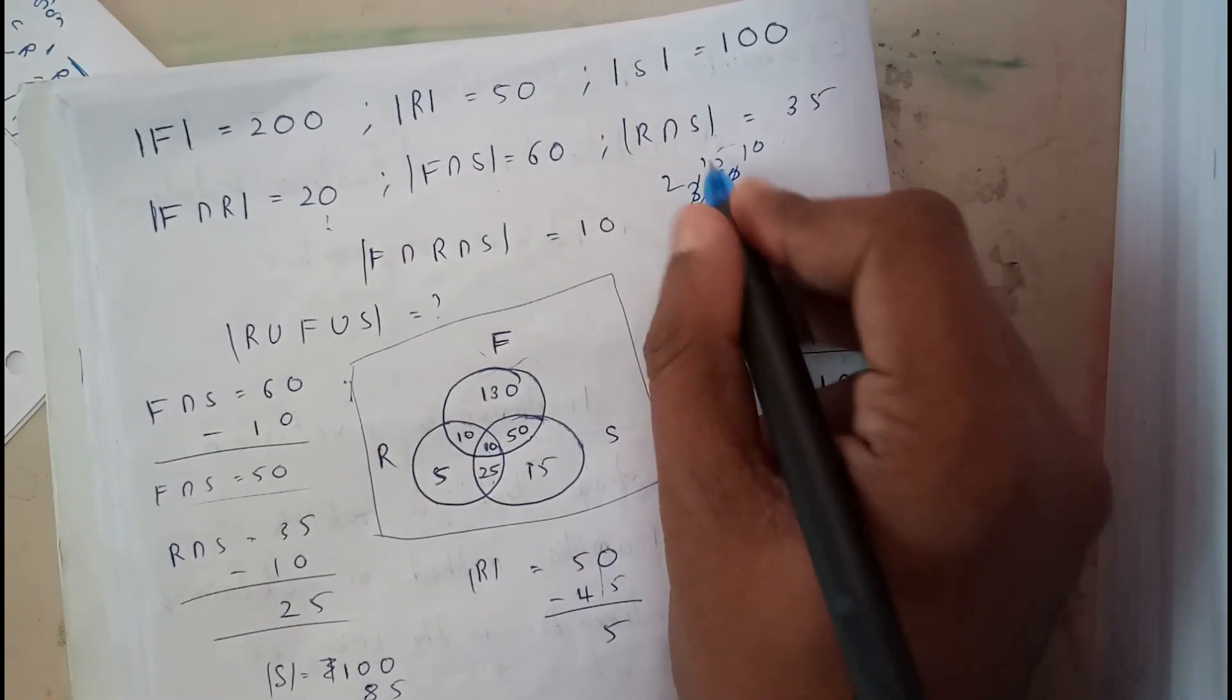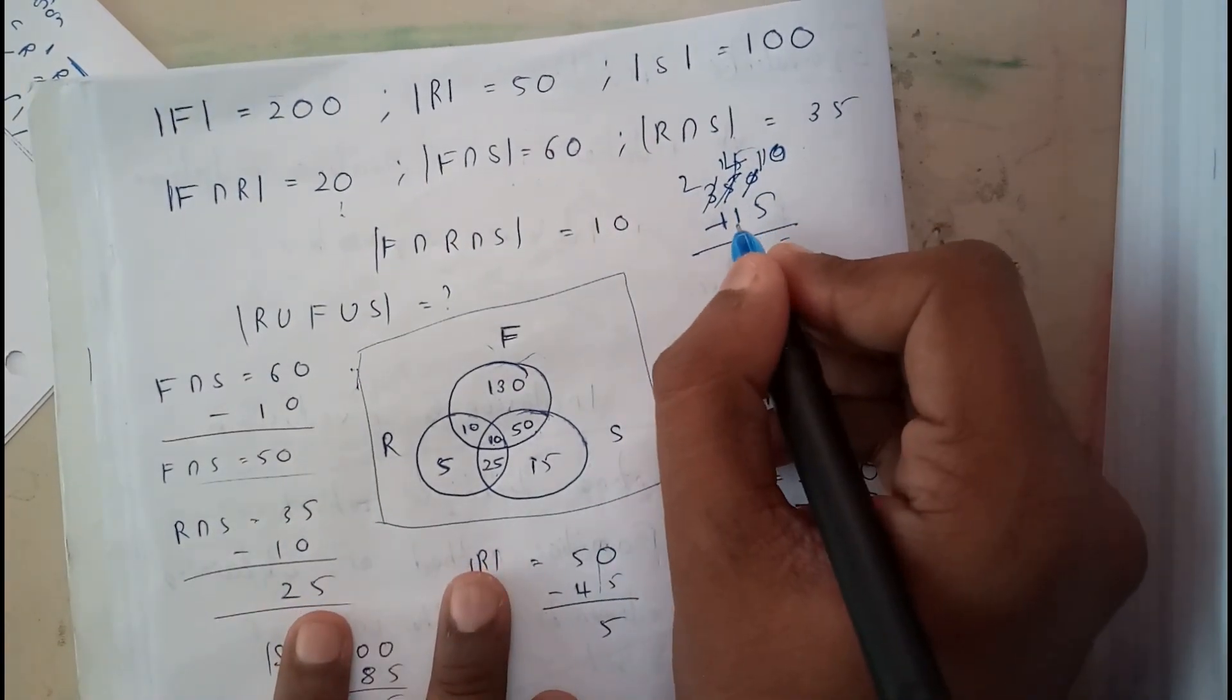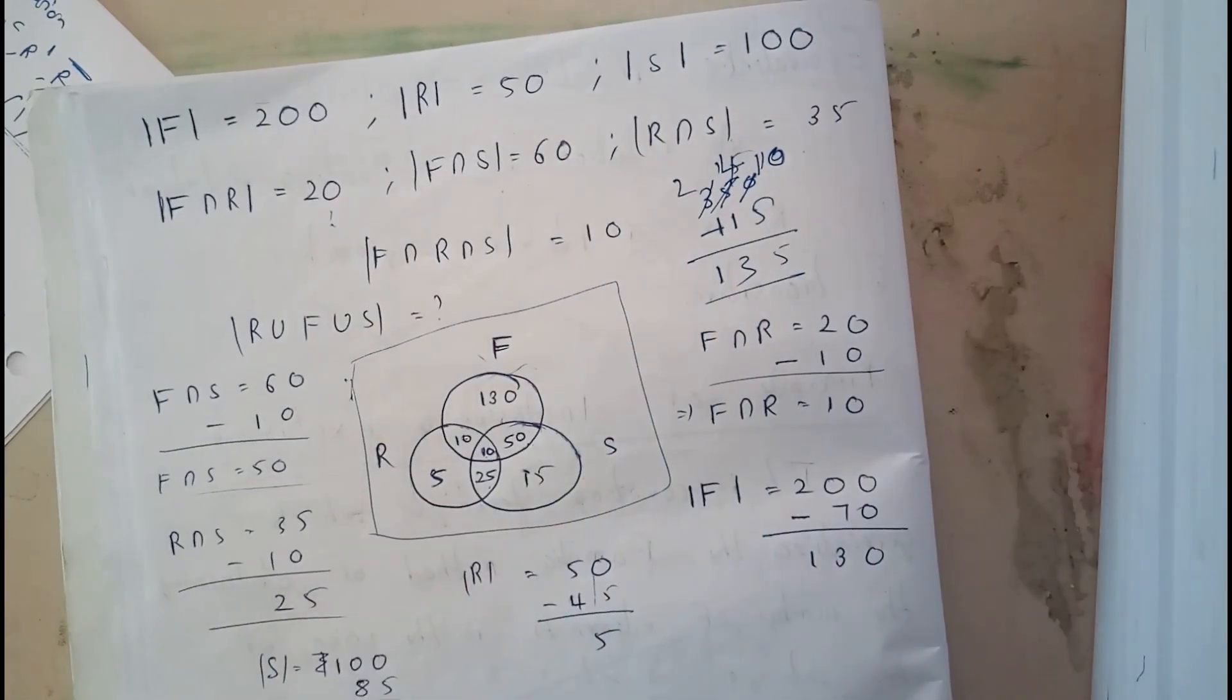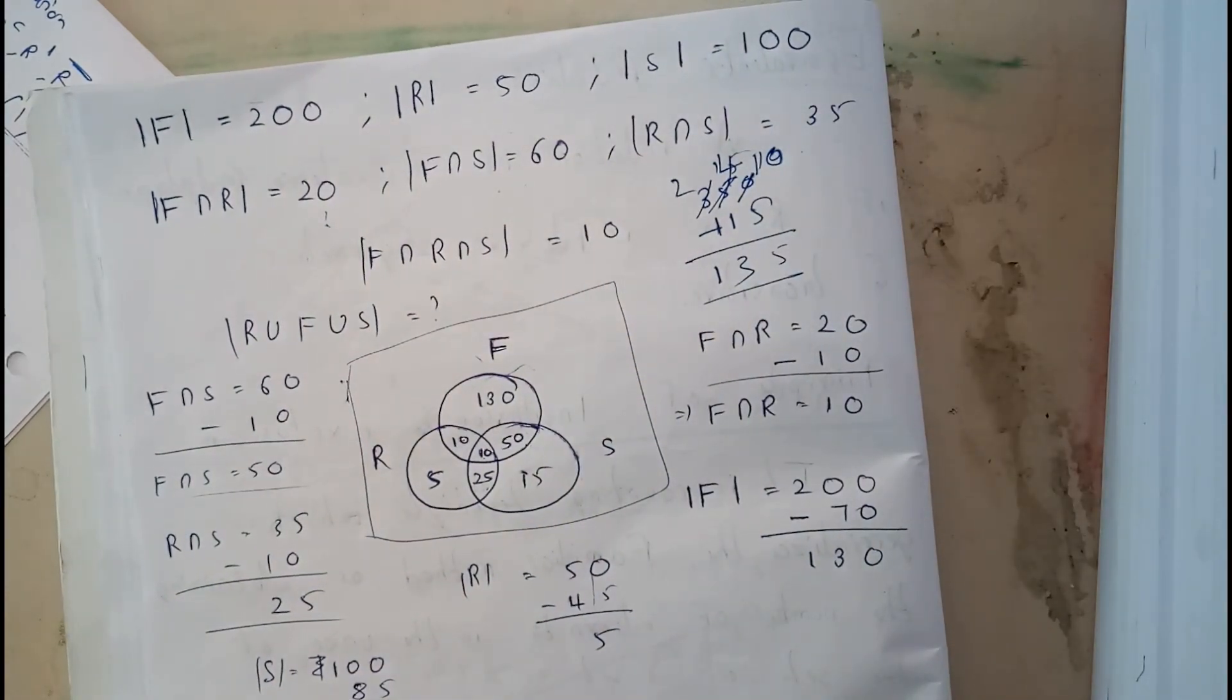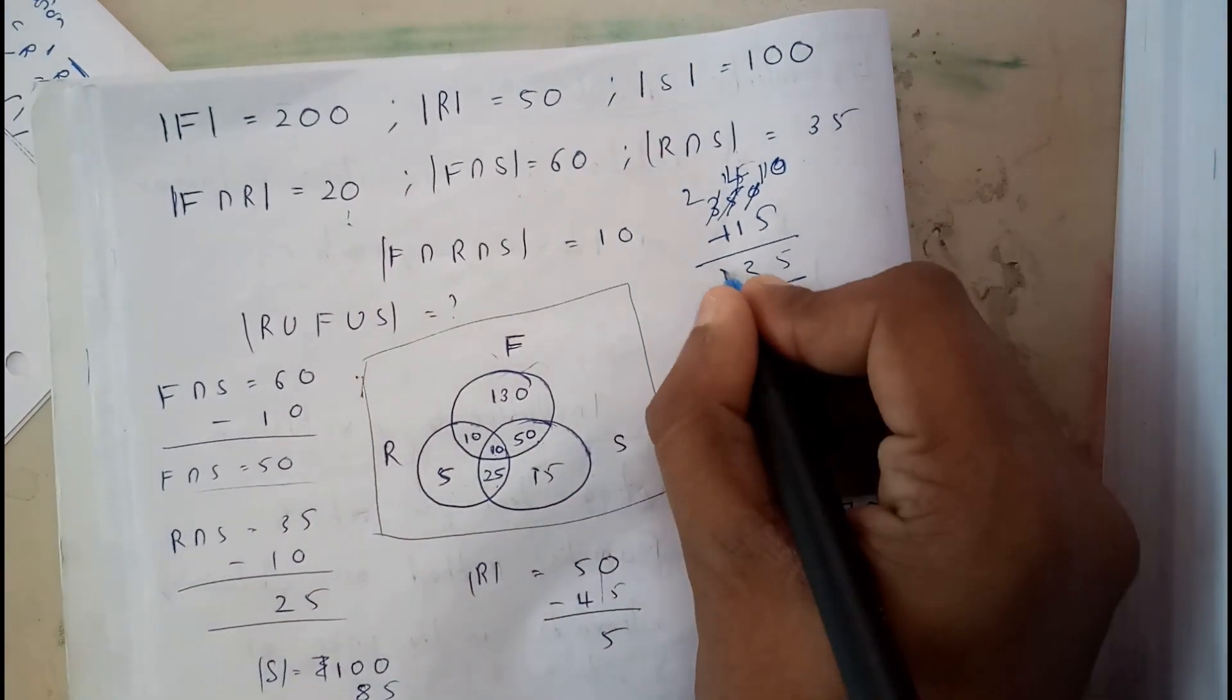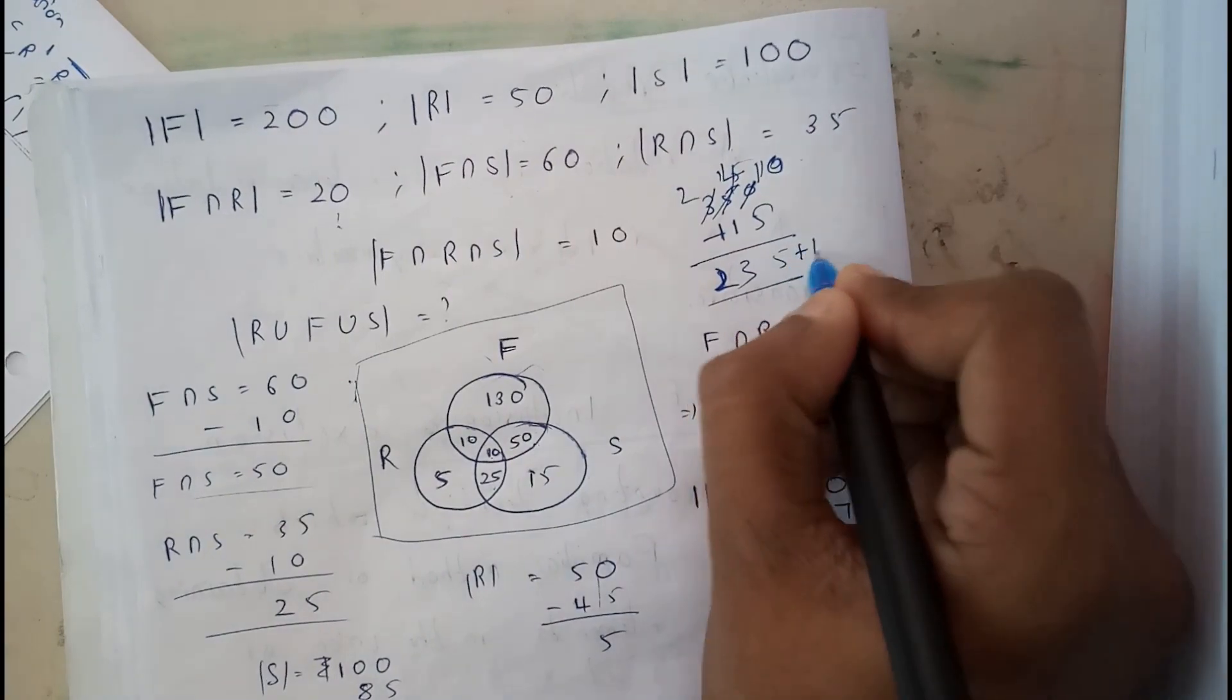Just a small mistake here. 24 minus 11 equals 13, that is 135. Sorry, 235. So adding up 10, 235 plus 10 equals 245. That is what I got here.